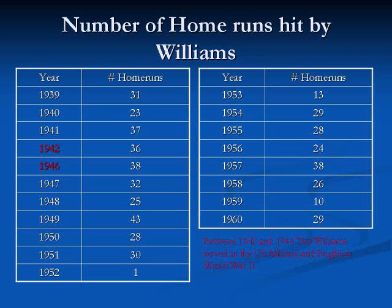This chart shows the data that we're going to be displaying. Notice the left-hand column shows the year that Ted Williams played, and the right-hand column shows the number of home runs hit by Ted Williams. So in 1939, Ted Williams hit 31 home runs. In 1960, Ted Williams hit 29 home runs.